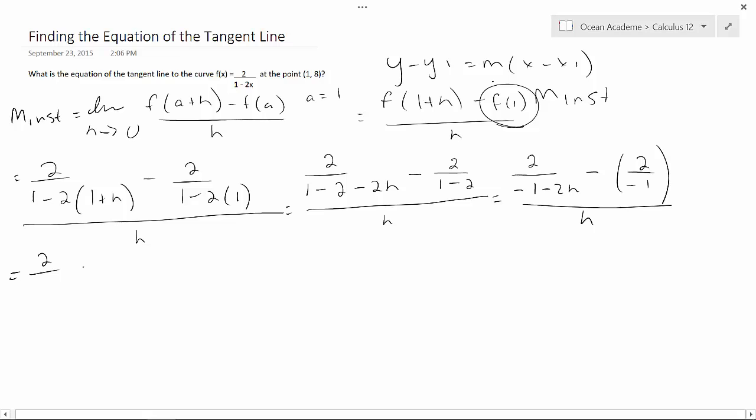So now what I'd like to do is get a common denominator. This will read 2/(-1-2h), and this is minus 2, but when you apply this negative, it's actually going to be plus 2. So I'm just going to put this all over (-1-2h). So now we have common denominators.